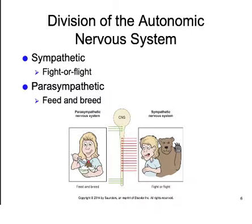The nerves that bring information to targets are different in the sympathetic and parasympathetic divisions. In the sympathetic division, nerve leads come from the thoracic and lumbar spine, whereas in the parasympathetic division they come from the brainstem and the sacral spine. Both are two-neuron chains with a pre- and a post-ganglionic neuron. In the parasympathetic division, the pre-ganglionic neurons are quite long and the post-ganglionics are rather short, whereas in the sympathetic division the pre-ganglionics are short and the post-ganglionics are long.